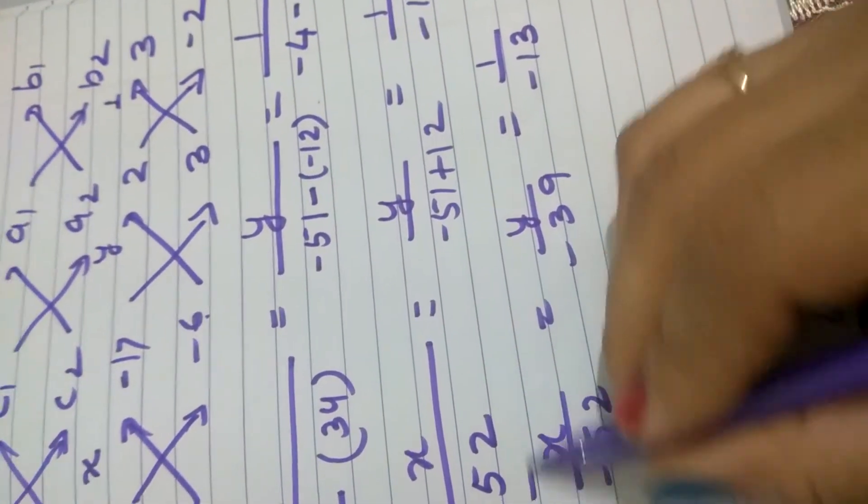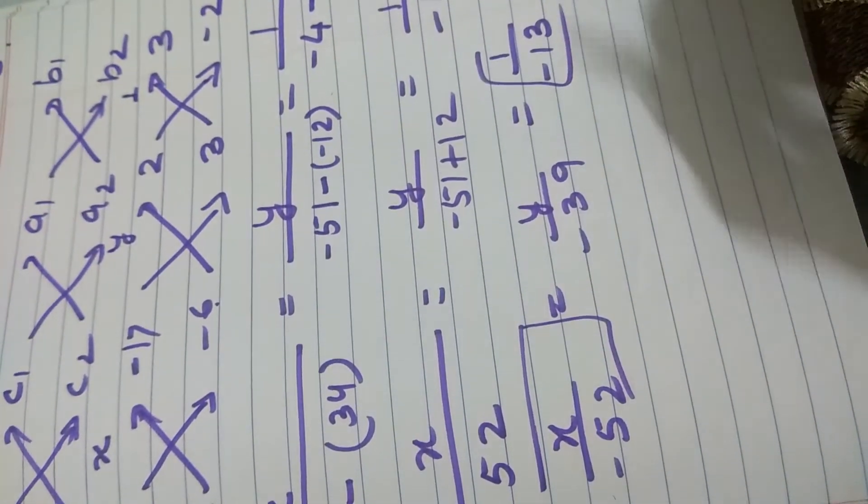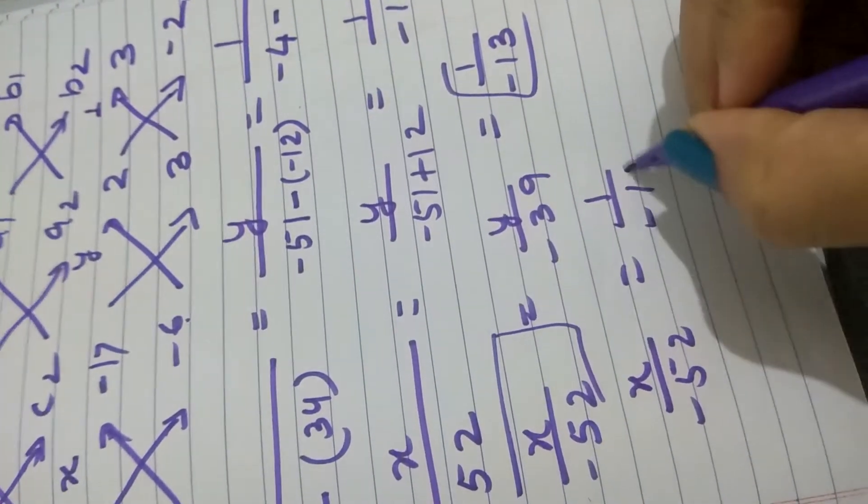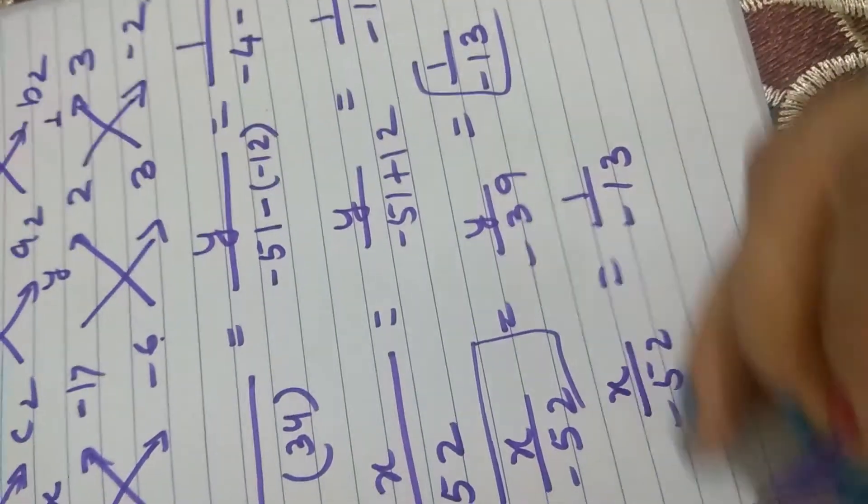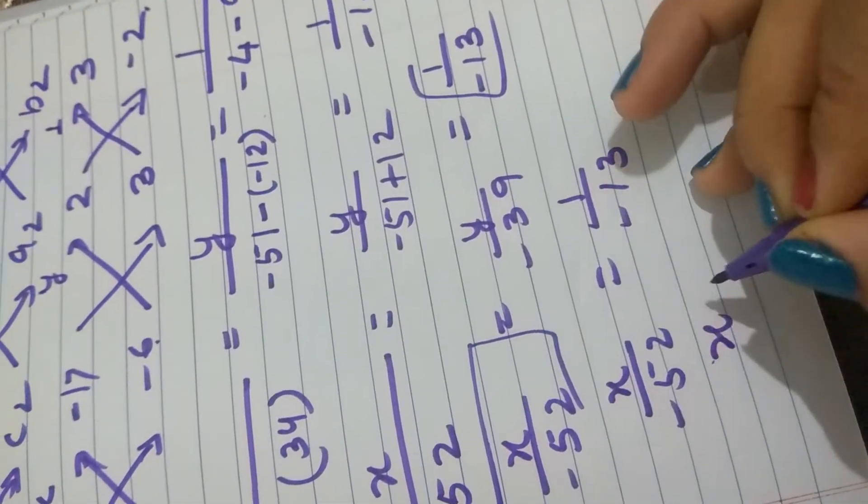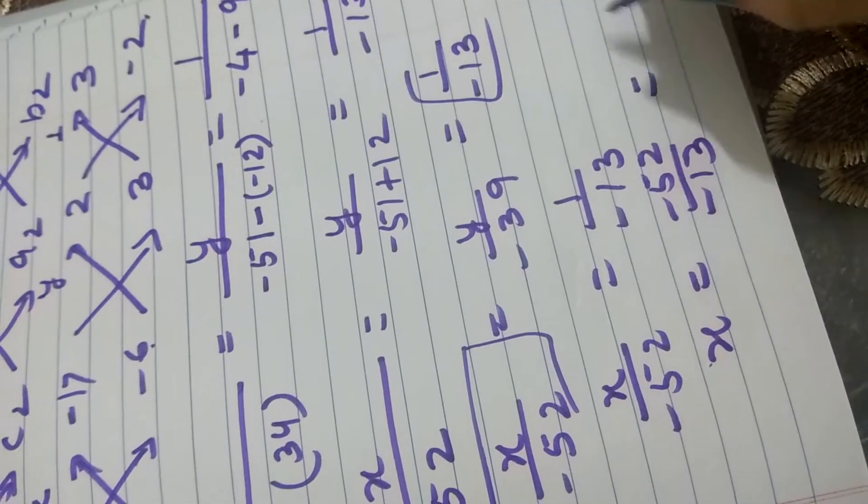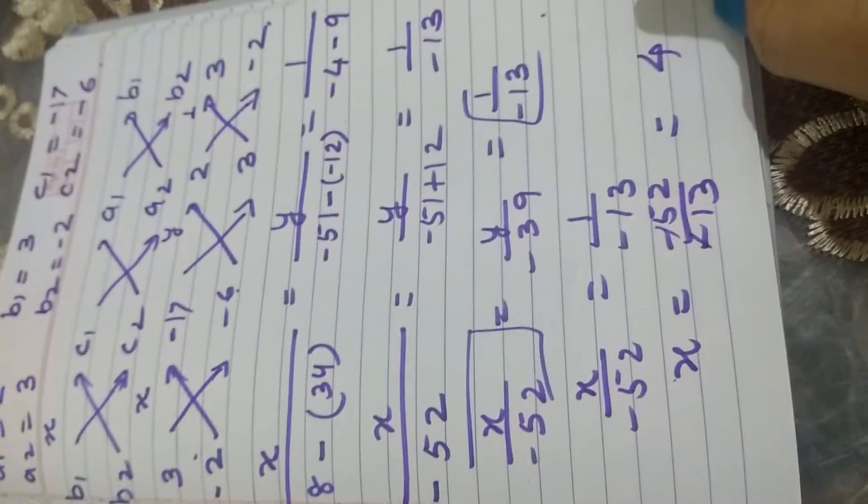Now, I will take this and this. X upon minus 52 equal to 1 upon minus 13. Thus, it gives me x is equal to minus 52 upon minus 13. So x equal to 4. Negatives get cancelled, so x comes out to be 4.